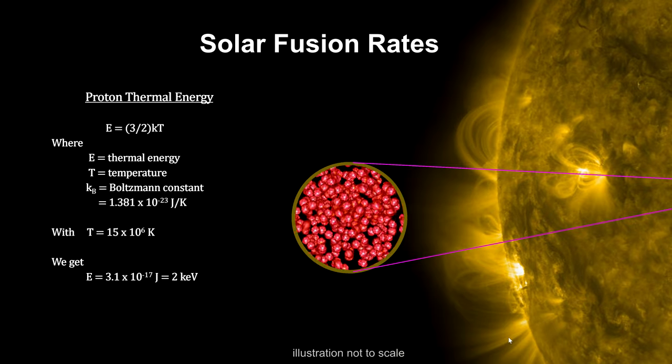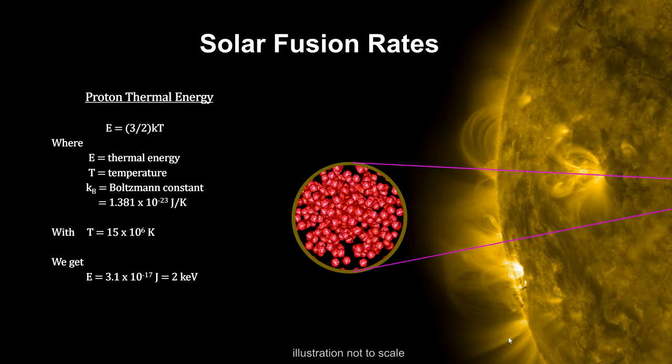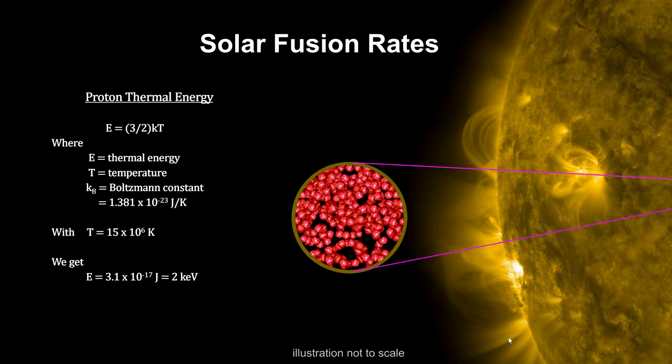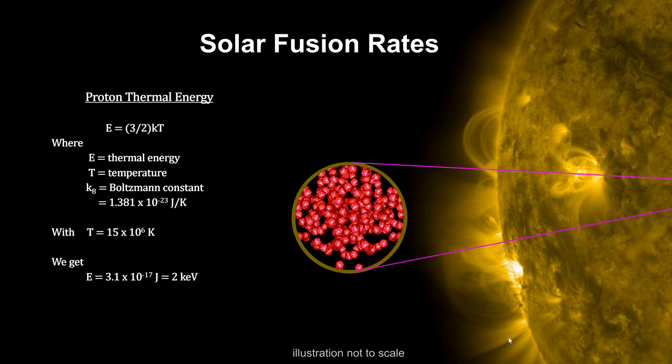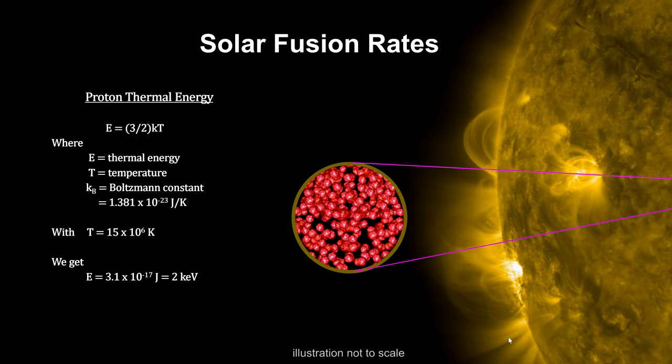Using the known relationship between temperature and kinetic energy, we can calculate the average thermal energy and velocity of the protons in the Sun's core. It depends entirely on the temperature, 15 million degrees Kelvin.